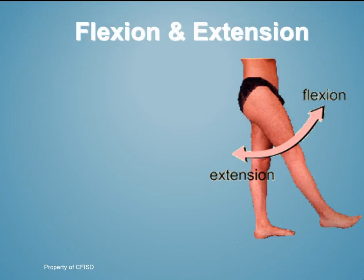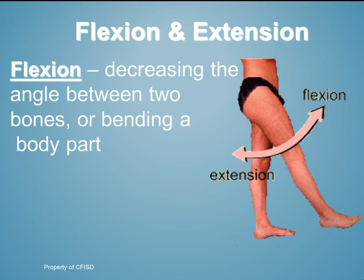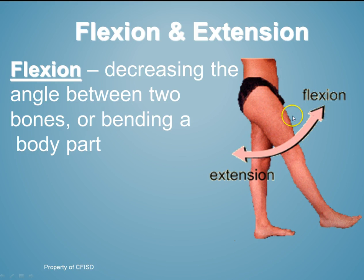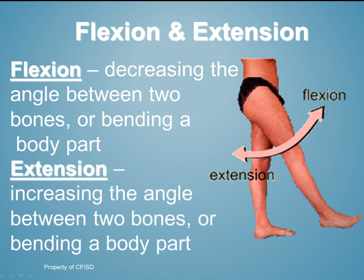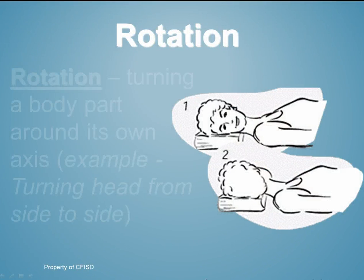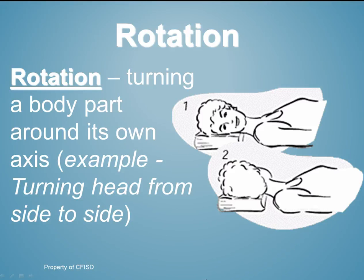Next is flexion and extension. Flexion is decreasing the angle between two bones or bending a body part — for example, moving your hip up, decreasing the angle. Extension is the opposite: swinging your leg back, increasing the angle between two bones. Next is rotation — turning a body part around its own axis, such as turning the head from side to side.